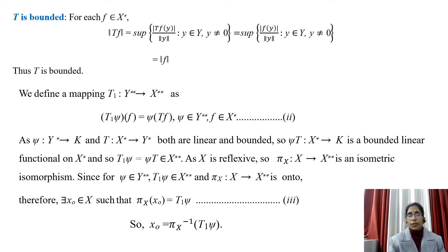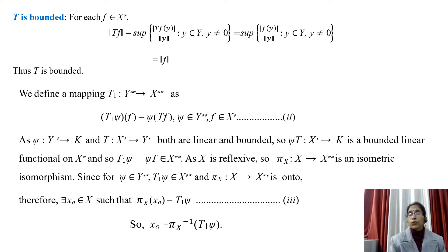Now we show that T is bounded. For each f in X*, the norm of T(f) equals the supremum of |T(f)(y)| / ||y|| over nonzero y in Y. Since T(f)(y) = f(y), this equals the supremum of |f(y)| / ||y|| over nonzero y in Y, which by definition equals the norm of f. So ||T(f)|| = ||f|| for every f in X*, and T is bounded.